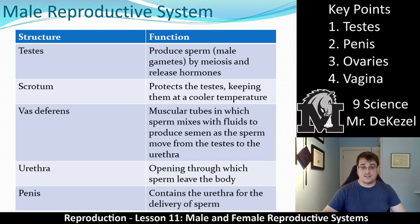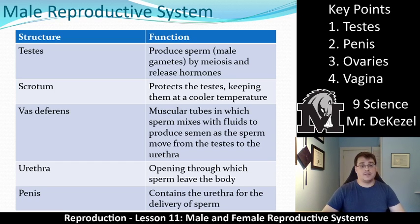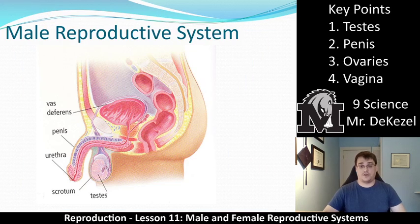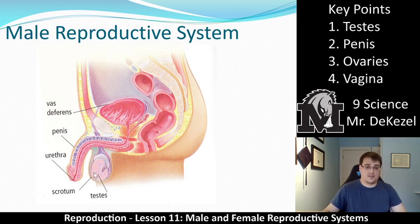Testes are what produces the sperm, which are the male gametes, by meiosis, and they also release hormones. Essentially they are the testicles. The testes are what produce sperm. That is right down here in the testicles — this is where sperm is produced.